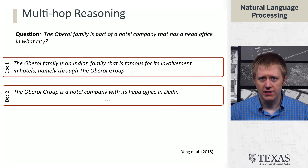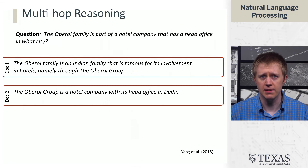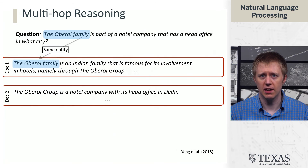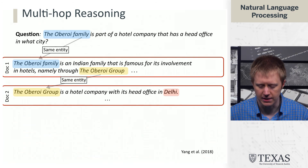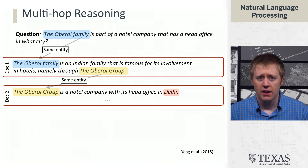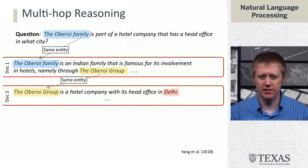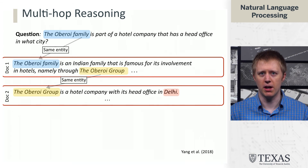Then we need information about what government position Shirley Temple held. So we go to the article on Shirley Temple and see that she served as Chief of Protocol of the United States. Here's another example: the Oberoi family is part of a hotel company that has a head office in what city? We need to take 'Oberoi family,' figure out that the hotel company is the Oberoi Group, and then find that the Oberoi Group has its head office in Delhi.